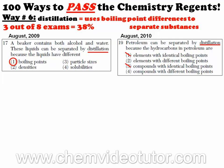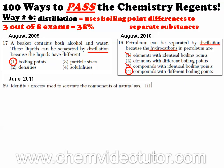Since petroleum involves chemical combinations of hydrogen and carbon, it contains compounds with different boiling points. The June 2011 chemistry regents asked pretty much the same exact question, except it was in a short answer format.